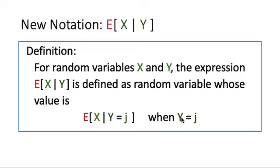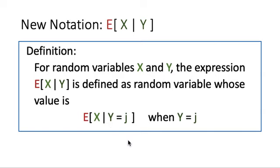You can think of this as a function of Y. If I tell you Y is equal to 1, then this expression will have the value: expected of X given Y equals 1. And if Y is equal to 2, then this expression gives us the value: expected of X given Y equals 2.